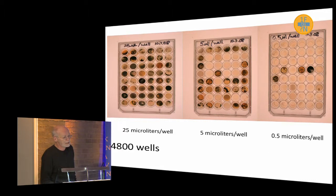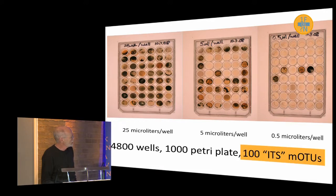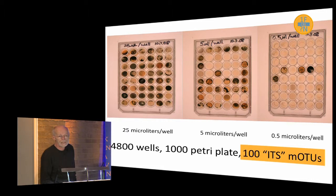So Prachan Shrista, who was the postdoc, had 4,800 wells and 1,000 petri dishes. And when Tim Zarro sequenced them, we had 100 molecular taxonomic units — 100 species out of our samples from both miscanthus and sugarcane.